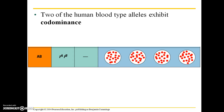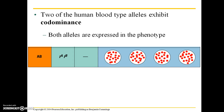Two of the human blood type alleles exhibit co-dominance — these are A and B. You can have both of these carbohydrate types present in your blood cells. It's not as if one of those carbohydrate type alleles masks the other; they're actually both physically produced within the red blood cells. Both alleles are expressed in the phenotype. So if you have type AB blood, you have both carbohydrate type A and carbohydrate type B manufactured.